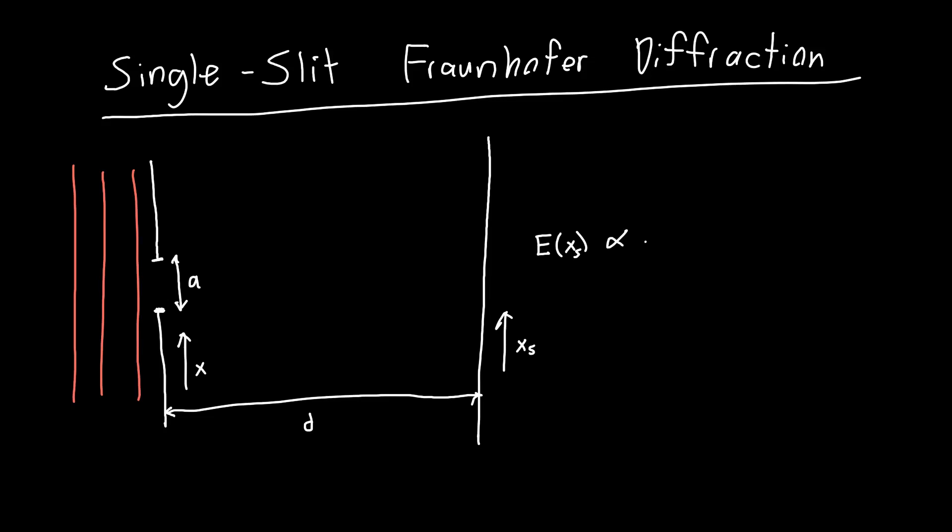We said that this was just proportional to e to the jkd times e to the jk xs squared over d. And then the Fourier transform of the aperture function, which is a function of x. So this will ultimately be a function of xs. And the x will drop out and everyone will be happy. Oh, and there should also be a 1 over d here, so let's divide this by d.